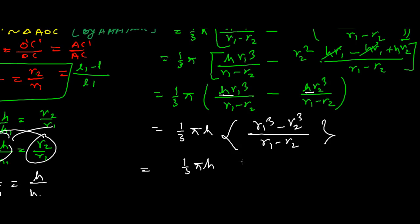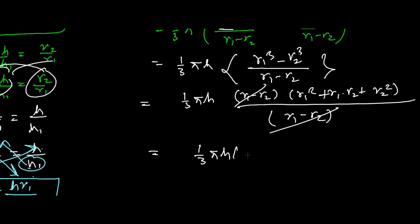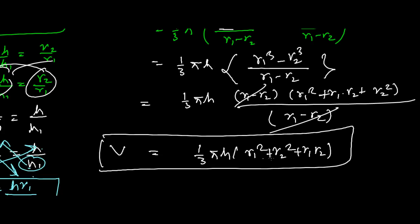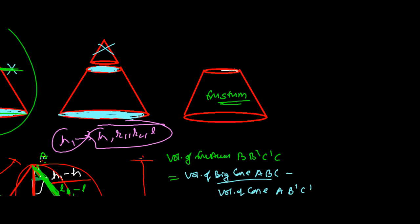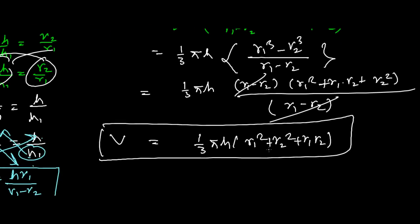Using a³ − b³ = (a − b)(a² + ab + b²), the factor (r1 − r2) cancels, giving the final volume formula: V = (1/3)πh(r1² + r1r2 + r2²). This is the volume of the frustum — if you know h, r1, and r2, you can easily find the volume.